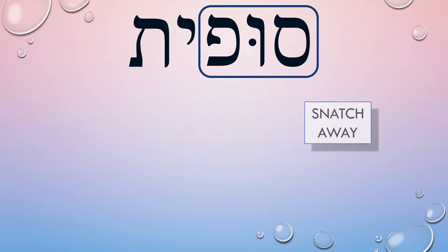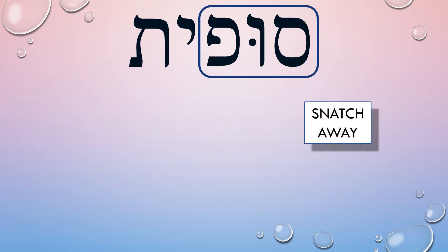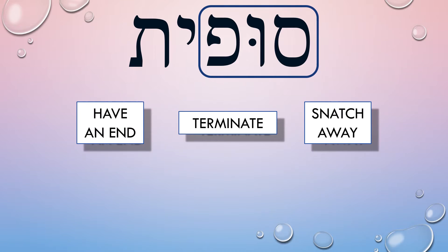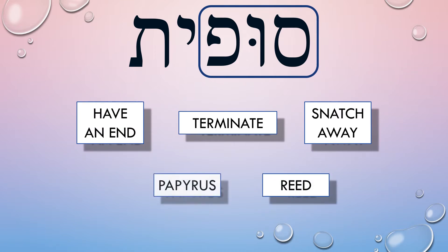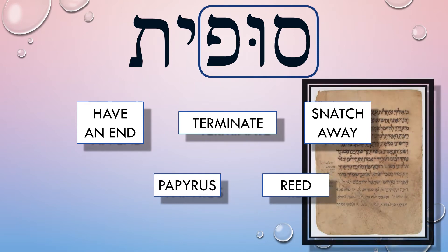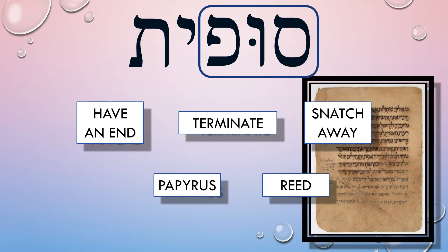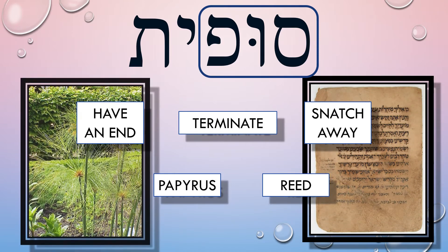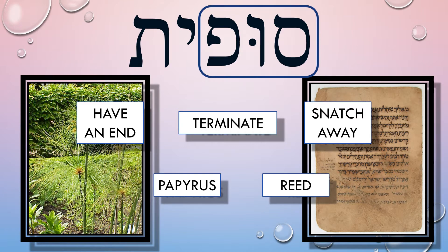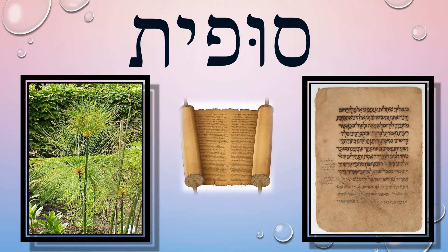First, it means to snatch away, terminate, and have an end. Next, it also means a reed, especially papyrus. Papyrus is a crude form of paper made with the stalks of the papyrus plant. The term papyrus can also simply refer to a document written on sheets of such material, joined together side by side and rolled up into a scroll — an early form of a book.